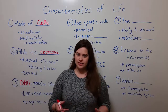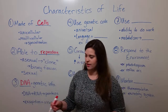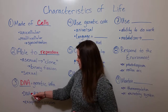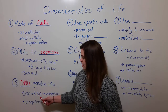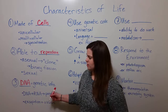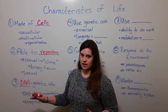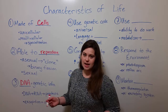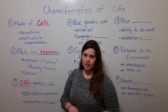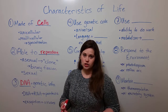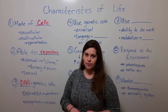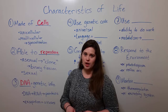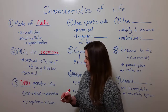The next thing that distinguishes living organisms is the use of DNA for genetic information. Information in living cells follows a certain path: it is stored in DNA, then sent through RNA to make proteins. This movement of genetic information from DNA to RNA to proteins is known as the central dogma of molecular biology. If you're interested in learning more, please see my video on that topic.